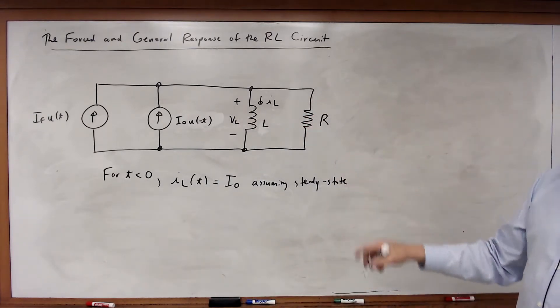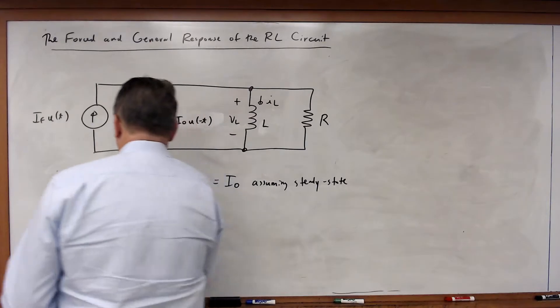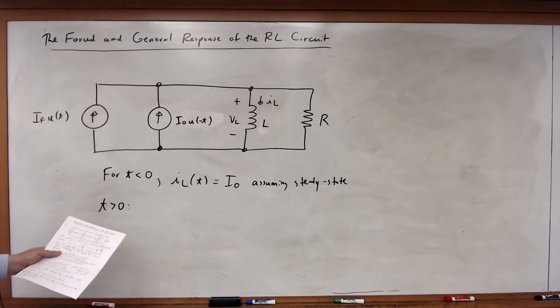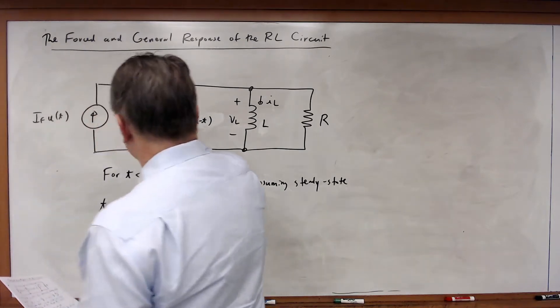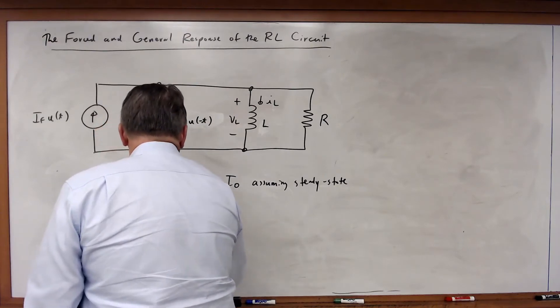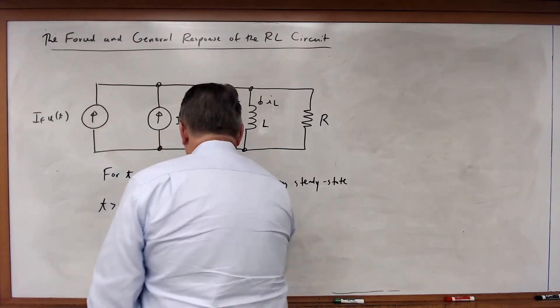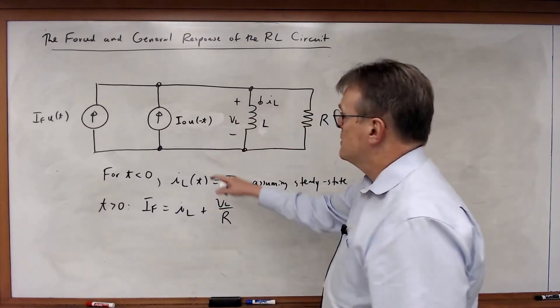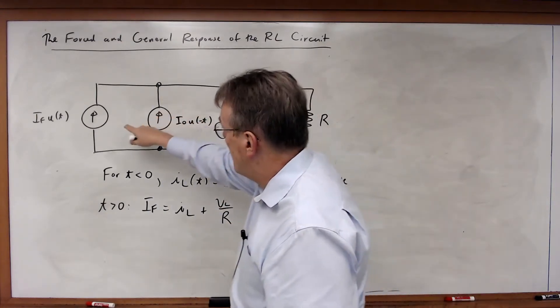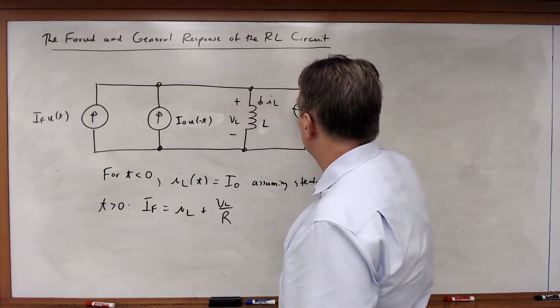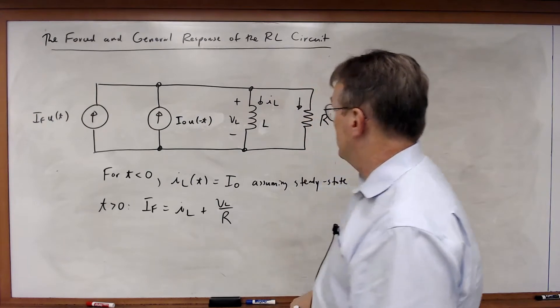And then for t greater than 0, after the switching event, what we'll get is this current will be on, this current goes off, and therefore IF will be equal to IL plus VL over R. So in this case, for t greater than 0, once this goes off by KCL, this current going in is equal to that current plus that current.